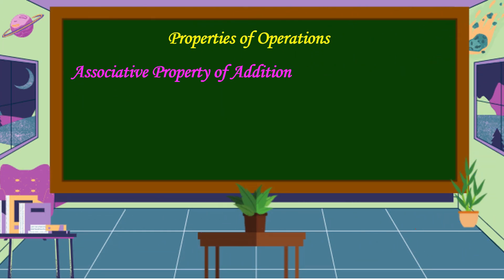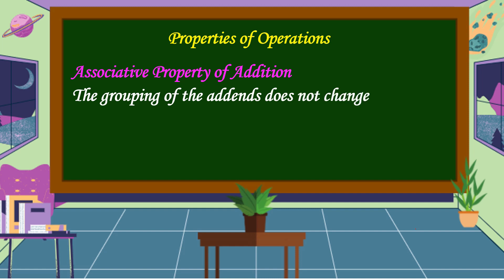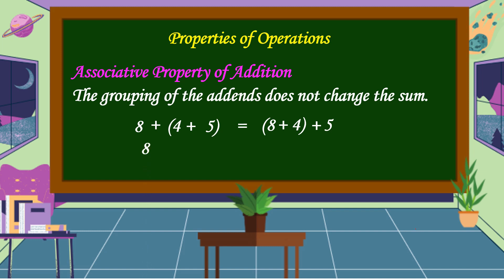The next property is the associative property of addition. This property states that the grouping of addends does not change the sum. For example, 8 plus (4 plus 5) is equal to (8 plus 4) plus 5. Let's check: 4 plus 5 is equal to 9, and 8 plus 4 is equal to 12. So 8 plus 9 is equal to 17, and 12 plus 5 is equal to 17 also. As you can see, our equation is balanced.